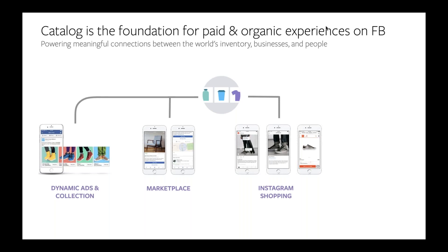We expect the number of inventory-based products and experiences on the Facebook family to continue to grow into 2019 and beyond. Everything is moving in the direction of being inventory-based because it allows us to further personalize the experience for individual users by showing them products and services we know they'll be interested in. Without getting your inventory into Facebook, you won't be able to take advantage of these sophisticated, high-performing ad units or organic shopping surfaces.